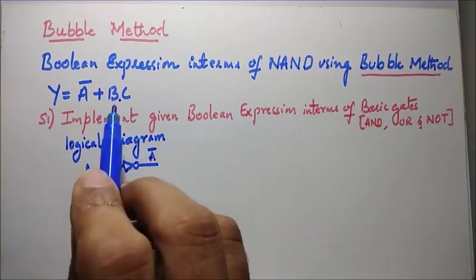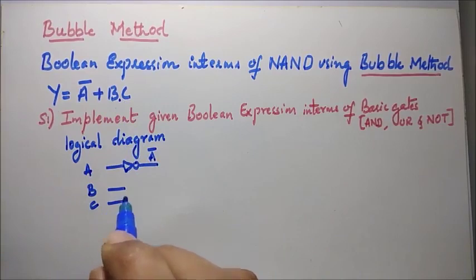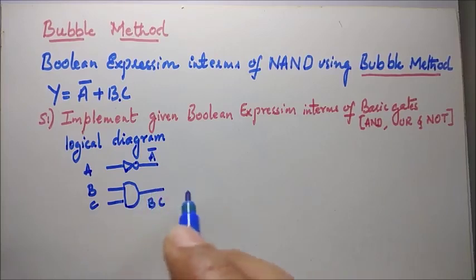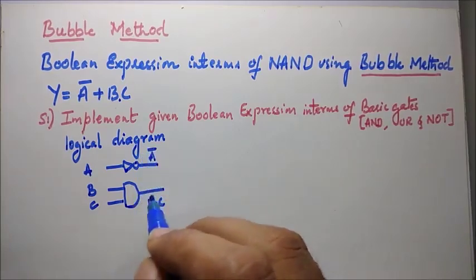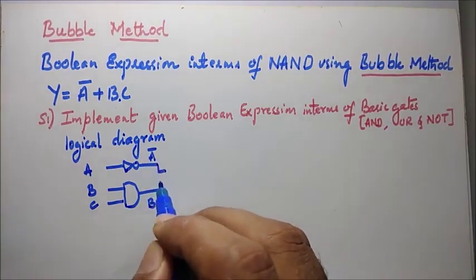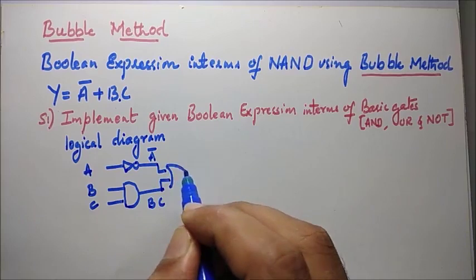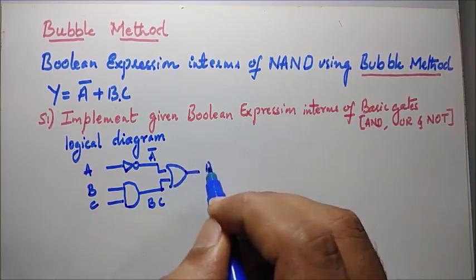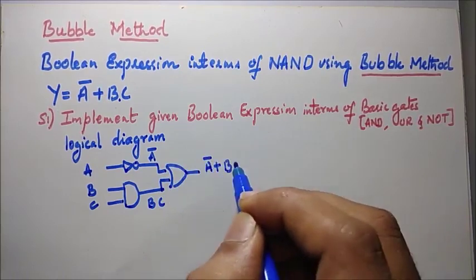Now I need to AND B with C, so I require an AND gate. The output is B·C. In turn I need to OR these two outputs, so I require an OR gate to perform the OR operation. This gives us our logical diagram in terms of basic gates.